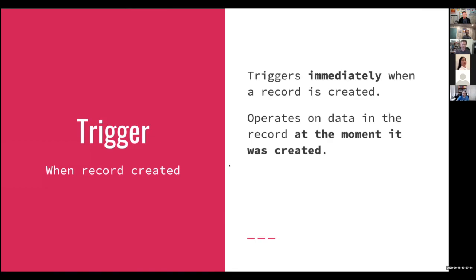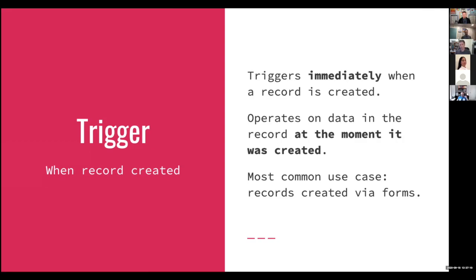This trigger is best used when you have things coming in from a form field, or when your base is designed so that certain information required by the trigger is there when the record is made. For example, with grouping, if you're grouping by a linked field, that link is automatically made in that group once you create the new record. So just be aware: 'record created' as a trigger happens the moment that record is made, so you have to be conscious of what your record looks like at that point.